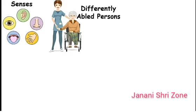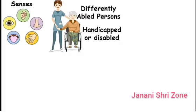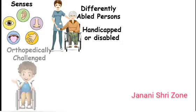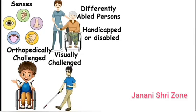Do not use the word handicapped or disabled. Use differently abled. Examples of differently abled are orthopedically challenged, visually challenged, and hearing challenged people.